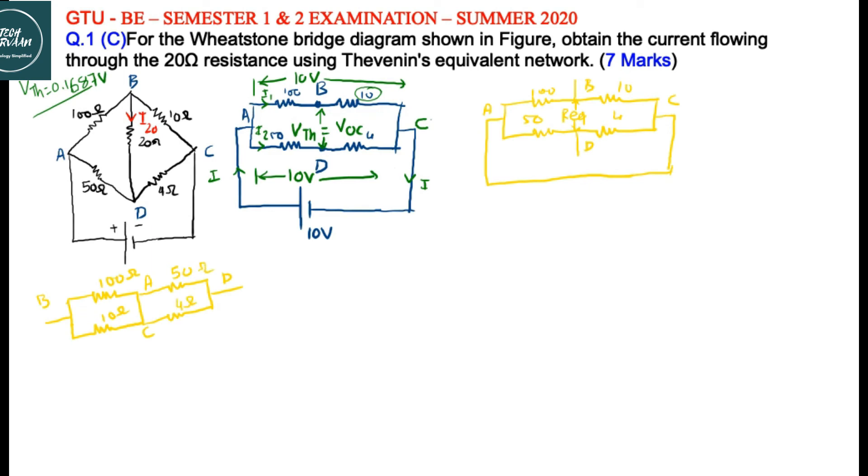We want resistance across BD. This can be redrawn like this: 100 ohm is in parallel with 10 ohm, 50 ohm is in parallel with 4 ohm. So the equivalent resistance across BD is 100 parallel 10 which is 9.09, plus 50 parallel 4 which is 3.7. So RTH is equal to 12.79 ohm.